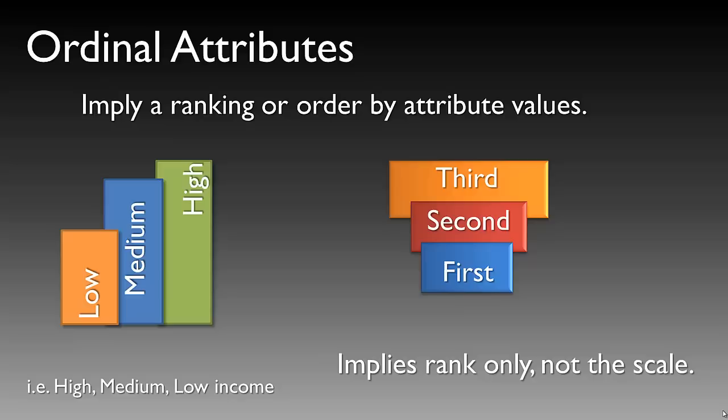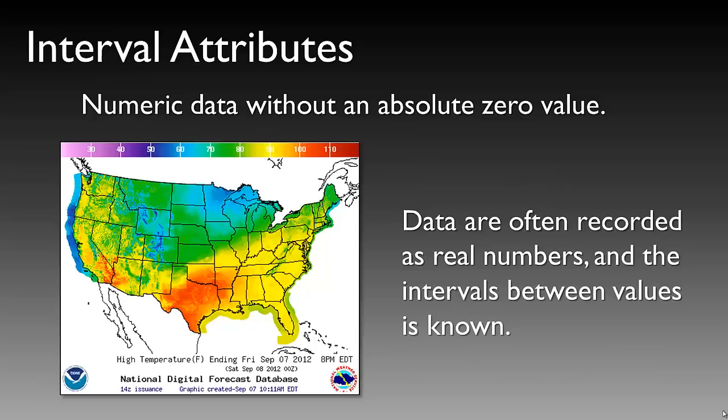Interval attributes are numeric data without an absolute zero value. When we speak of absolute zero, we mean a value at which we can no longer go any lower. Interval attributes have no absolute zero value, and data are often recorded as real numbers where the intervals between values are generally known. For example, the Fahrenheit temperature scale is an interval attribute.